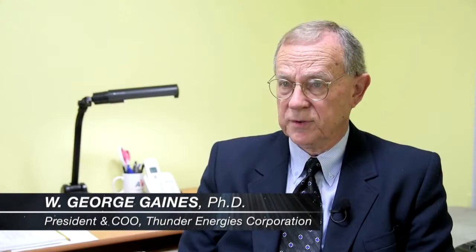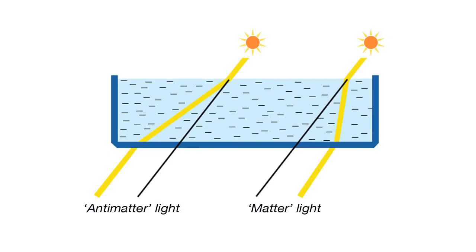By antimatter, we mean an entity with characteristics that are the exact opposite of ordinary matter, including the index of refraction of light, which is opposite.